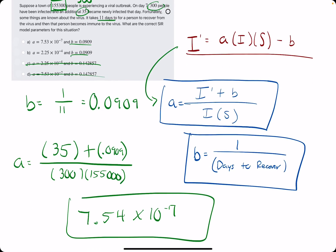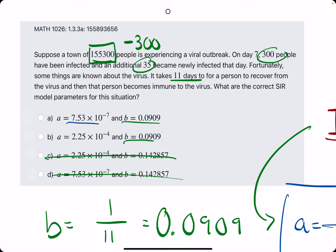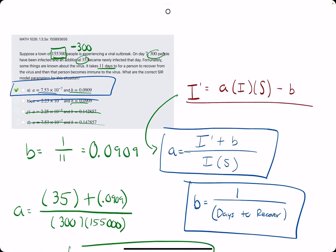And looking through our answers, definitely the closest one is option A with 7.53 times 10 to the negative seven. So we break out the eraser to see that A is, in fact, our answer.